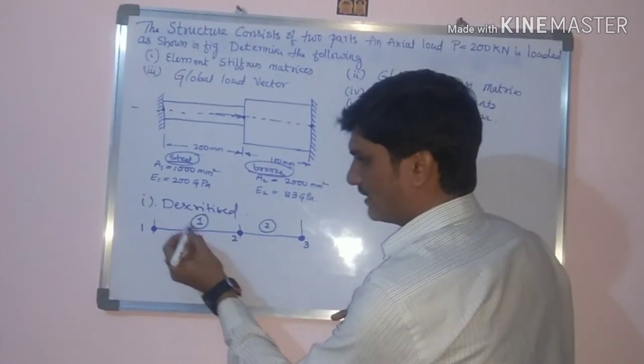The global load vector F is the force vector. The force is acting at node 2, with no force at nodes 1 or 3. The force vector is F = [F1, F2, F3]. Substituting: F1 remains as is, F2 = 200 × 10³ N, and F3 remains as is. Only substitute the force where it is acting — at node 2. This is the global load vector.